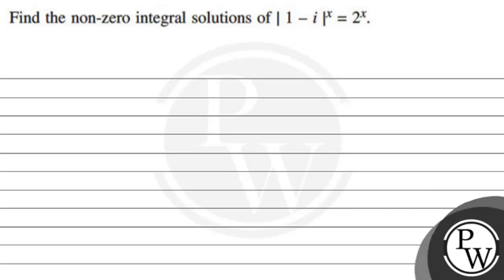Hello. Let us read the question first. The question says: find the non-zero integral solutions of modulus of (1 minus i) whole to the power x, equals to 2 to the power x.